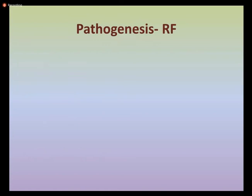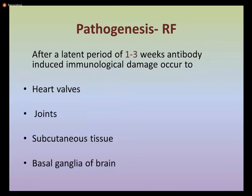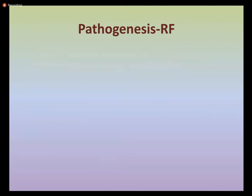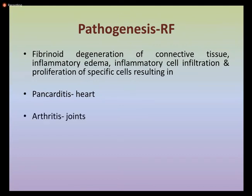In the pathogenesis of rheumatic fever, after a latent period of one to three weeks, antibodies are produced and induce immunological damage occurring in the heart valves, joints, subcutaneous tissue, and basal ganglia of the brain. At the cellular level, pathogenesis involves fibrinoid degeneration of connective tissue, inflammatory edema, and proliferation of specific cells — causing pancarditis in the heart, arthritis in joints, Aschoff nodules in subcutaneous tissue, and chorea in the basal ganglia. Chorea is a neurological disorder characterized by jerky involuntary movements affecting the shoulders, hips, and face.